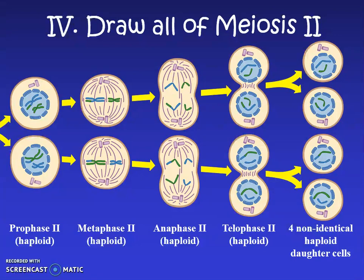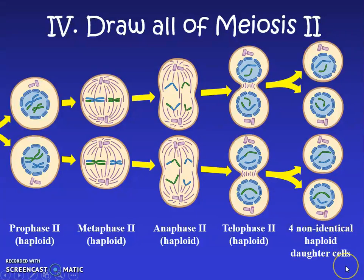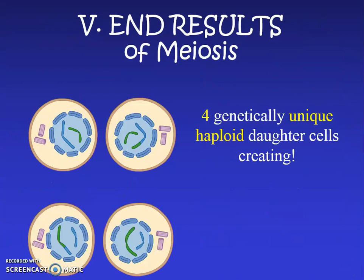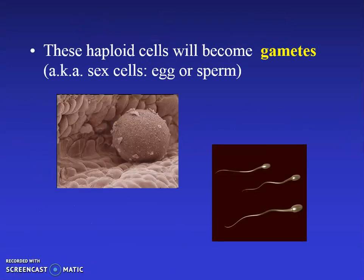By the end, the result is four daughter cells. Compare that to mitosis, which only produced two! Each of the resulting nuclei is a little different — looking carefully, the blue and green are in different combinations for the big and little chromosome in each daughter cell. So not only are they haploid, they're non-identical. The result: four genetically unique haploid daughter cells.